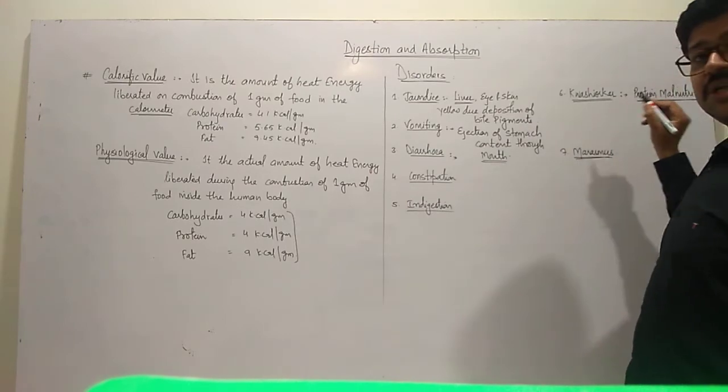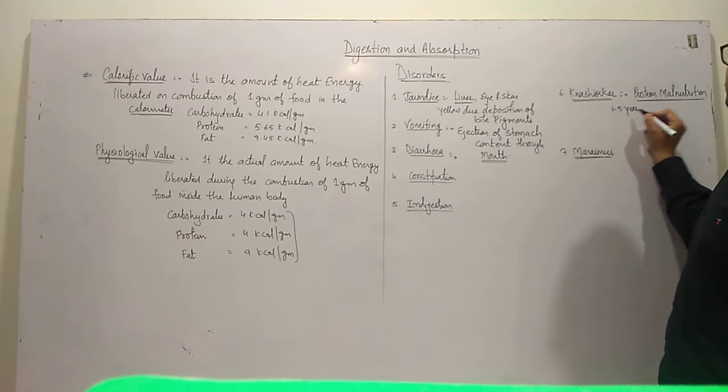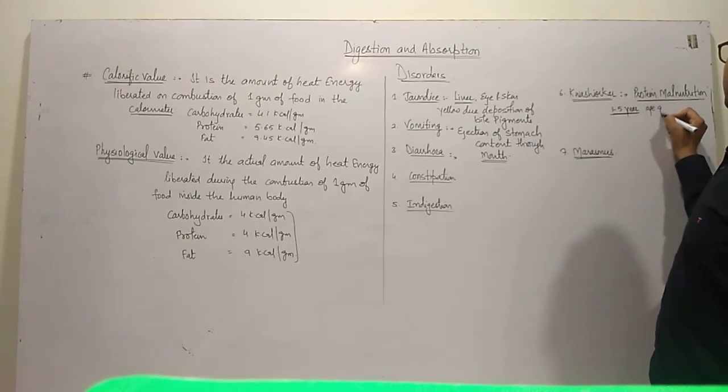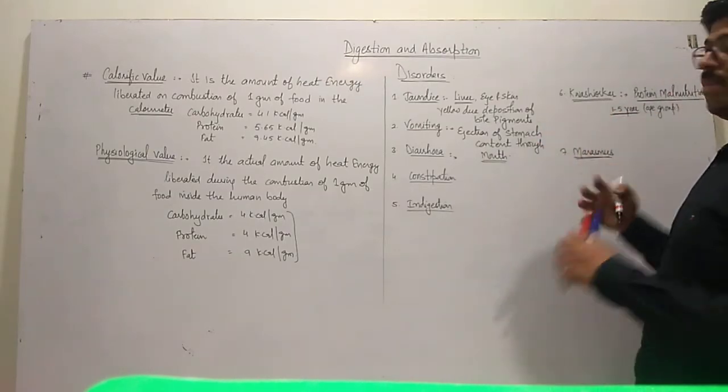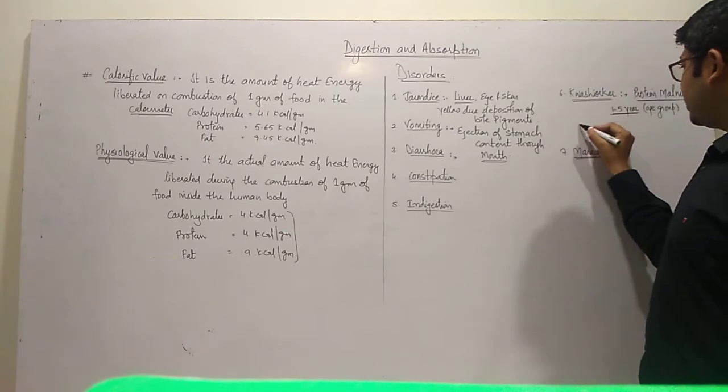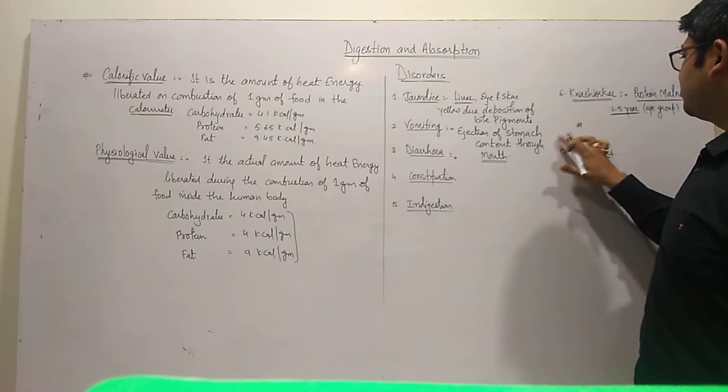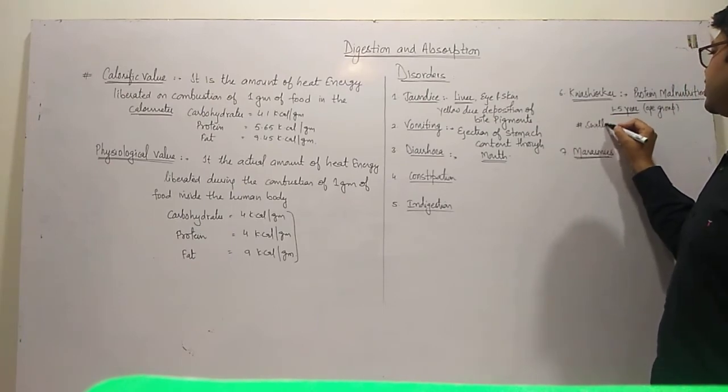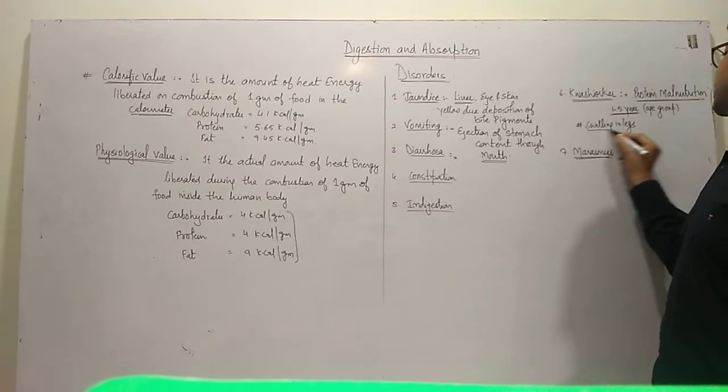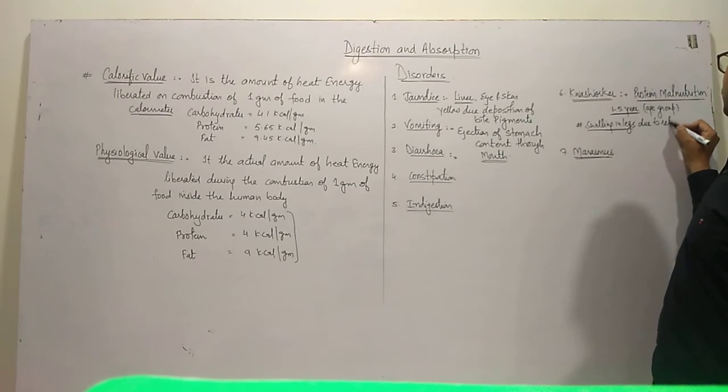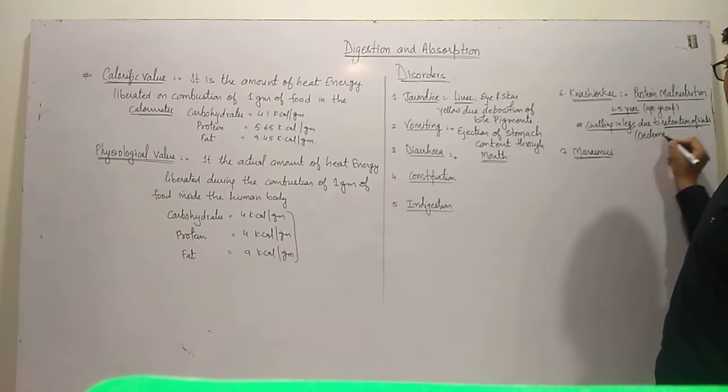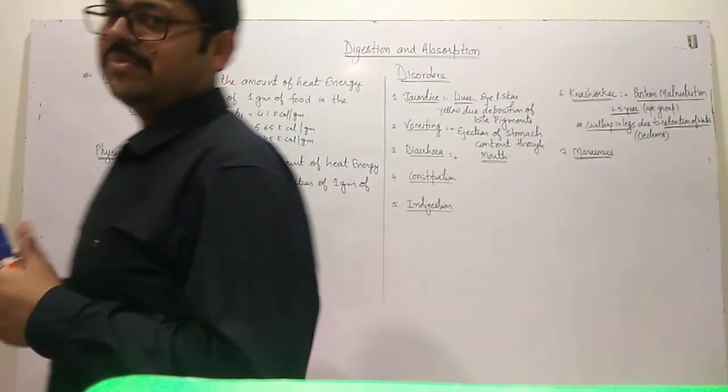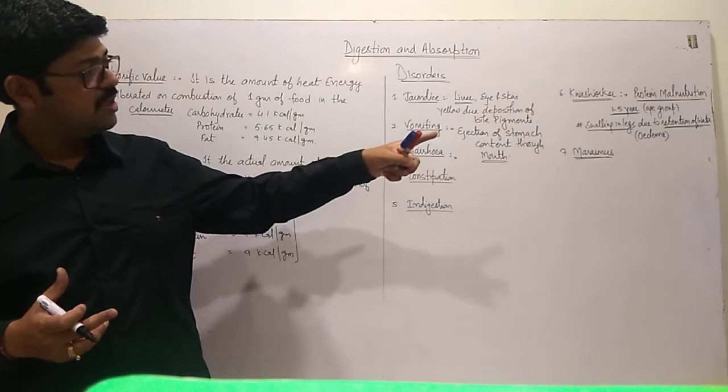Kwashiorkor is found in children of one to five year age group. It is caused by protein deficiency. The most prominent symptom is swelling in the legs due to retention of water.